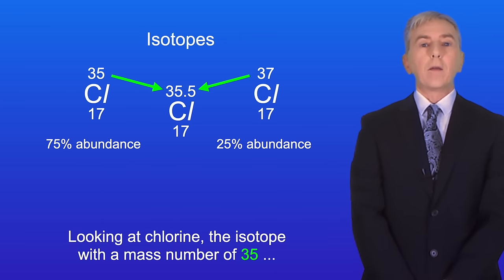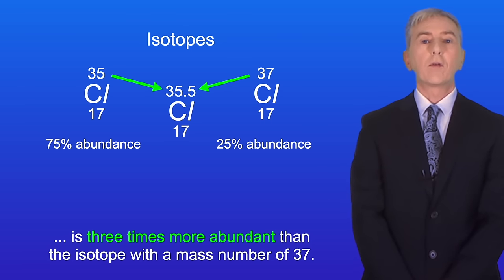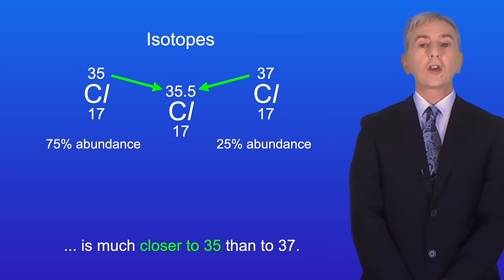Looking at chlorine, the isotope with a mass number of 35 is three times more abundant than the isotope with a mass number of 37. And this explains why the relative atomic mass of chlorine is much closer to 35 than to 37.